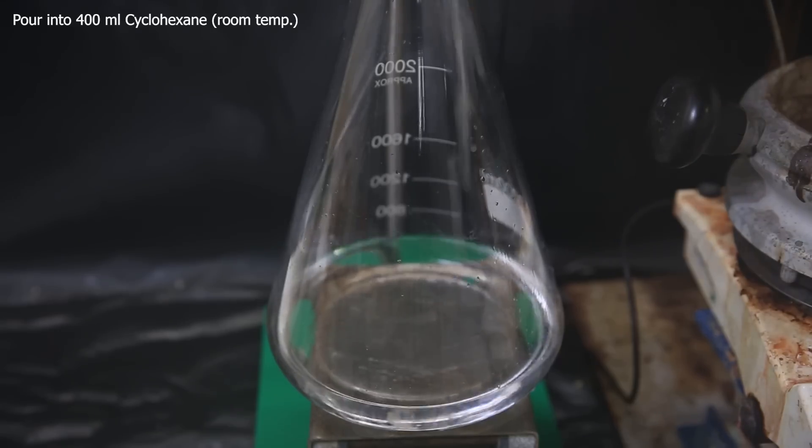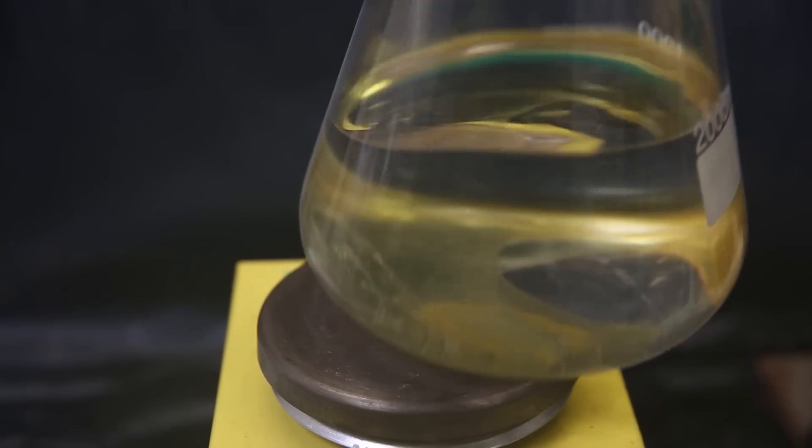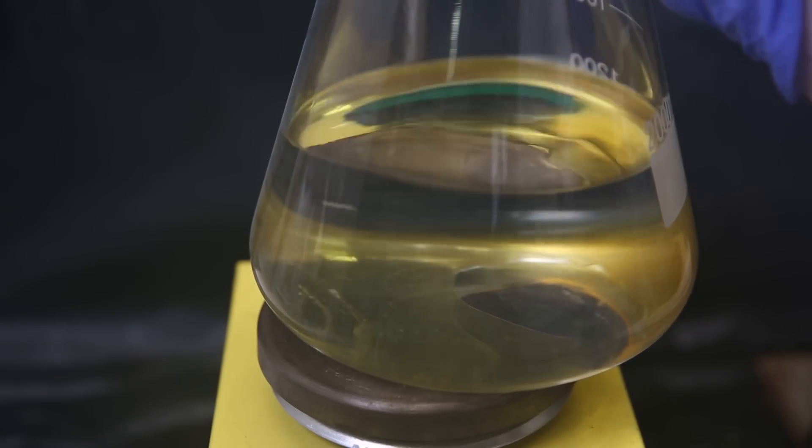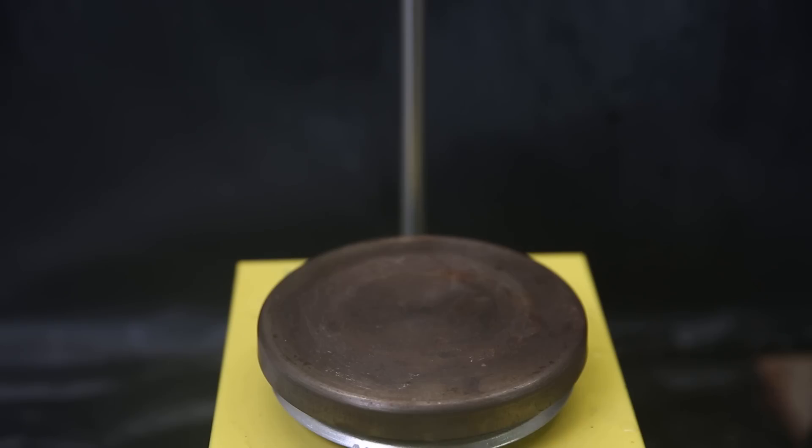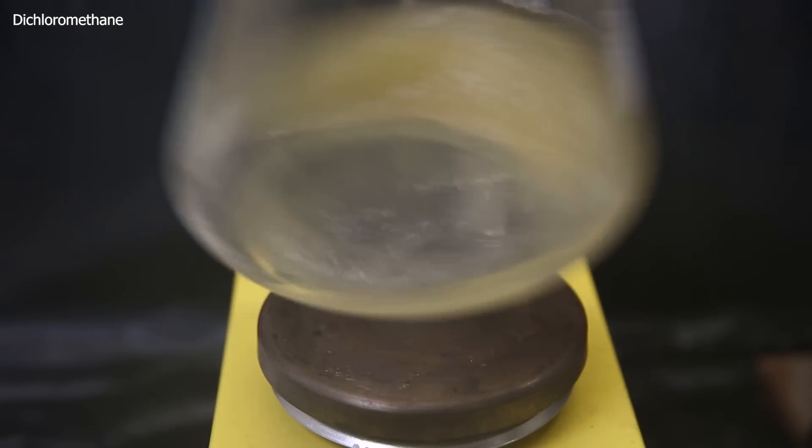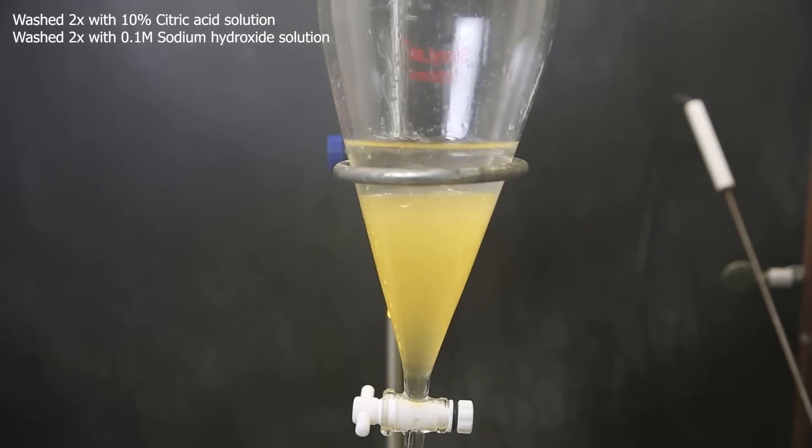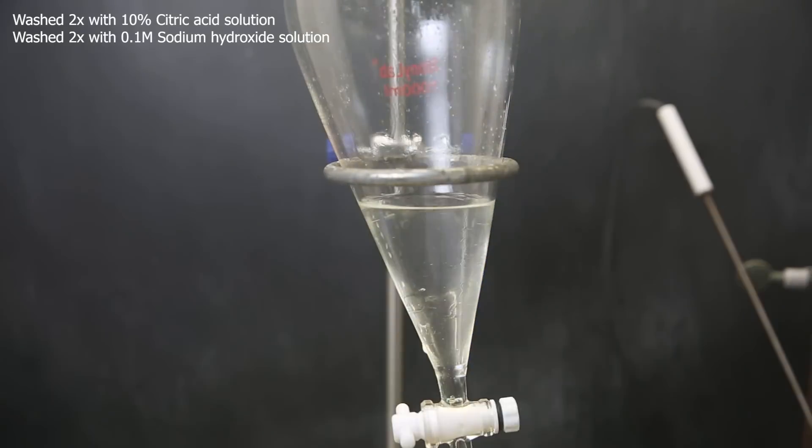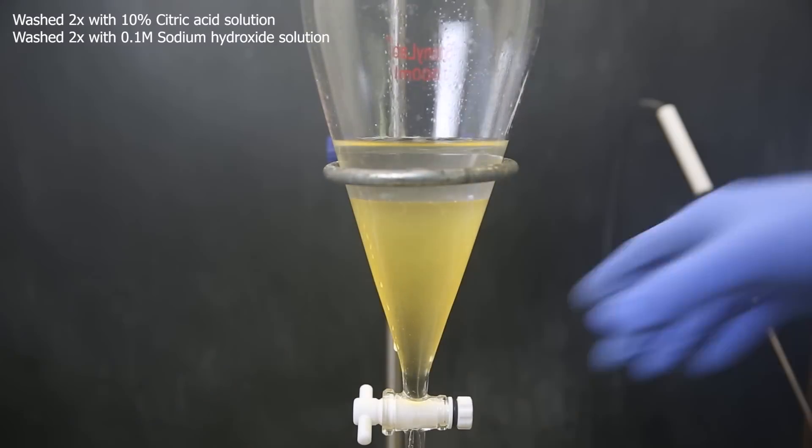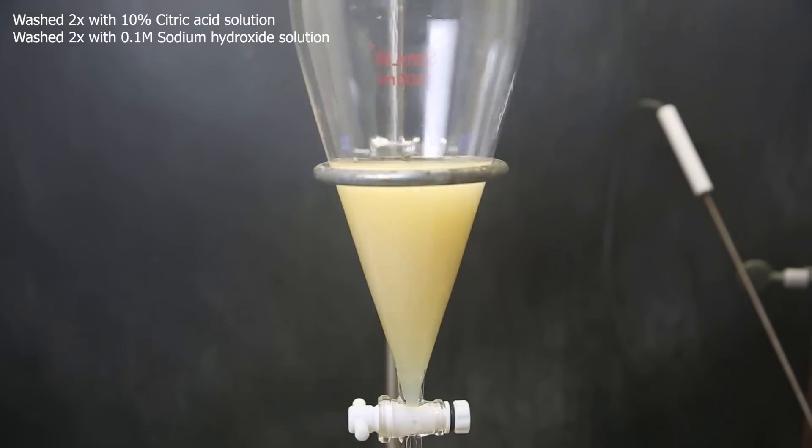Then to precipitate the product, I pour it into 400 mls of cyclohexane and it immediately becomes cloudy. And then allowed it to settle, but it's settled as an oil and not a solid, for which the literature calls for some extra workup. So I discarded all of the solvent and then dissolved the remaining oil in some dichloromethane. I move this solution to a separatory funnel and wash it twice with a 10% citric acid solution and then twice with a 0.1 molar sodium hydroxide solution, which in literature is said to fix this problem.